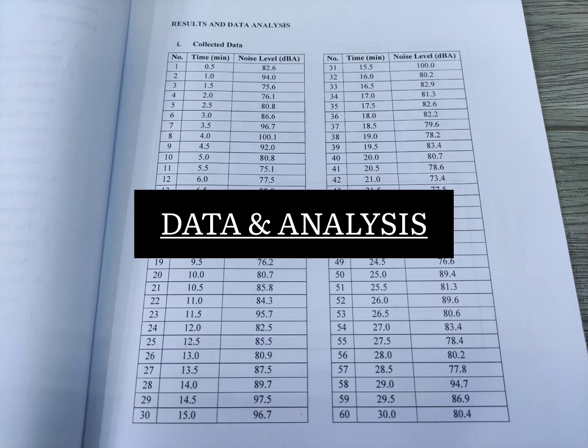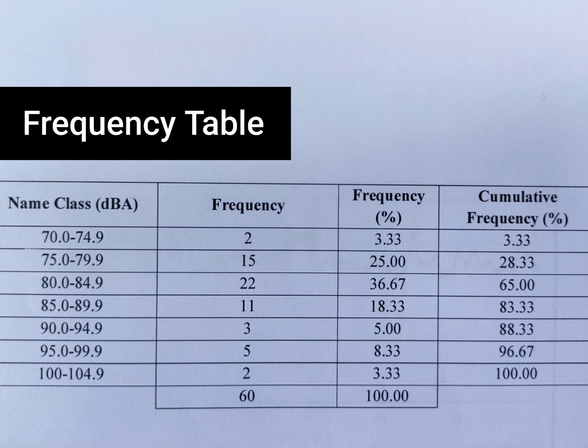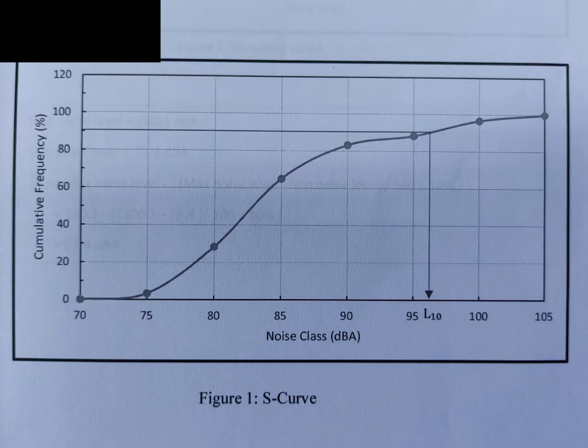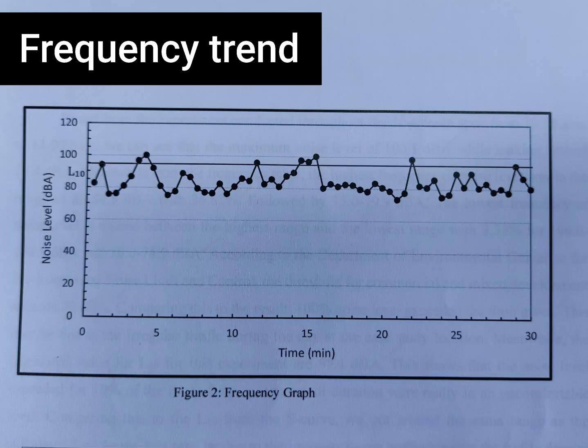Let's move to the data and analysis. You can have 60 data points for a half-hour study. Then tabulate into the frequency table in order to plot the S-curve. You can determine the L10 from the S-curve, which is at 90%. Then plot the frequency trend and enable the L10 on the graph.